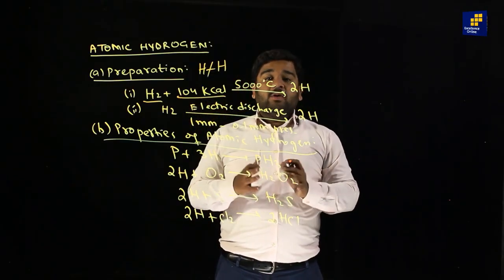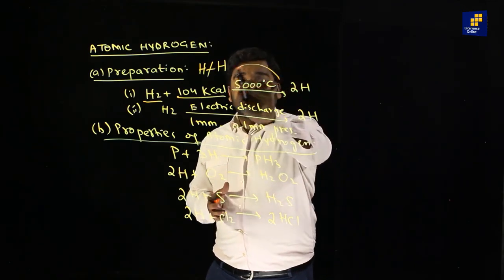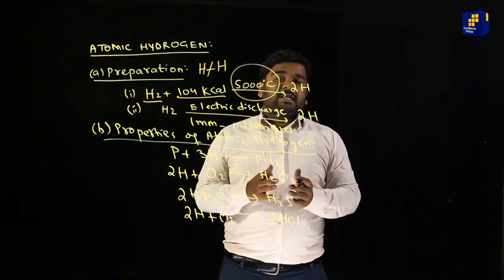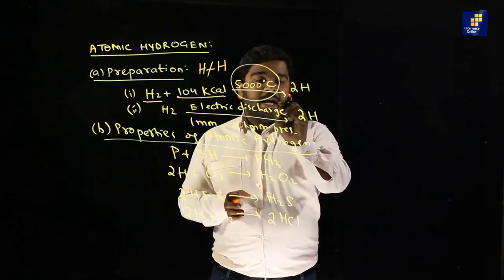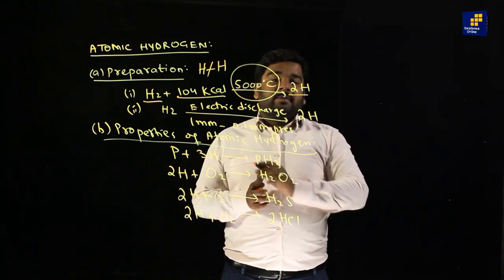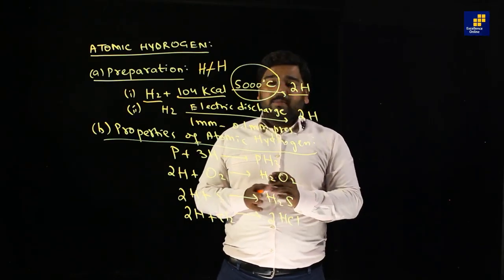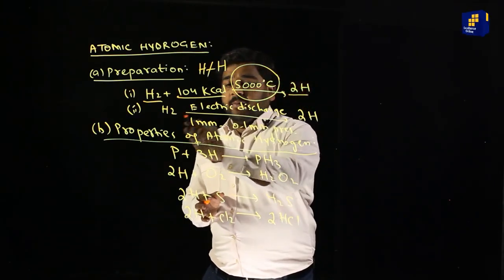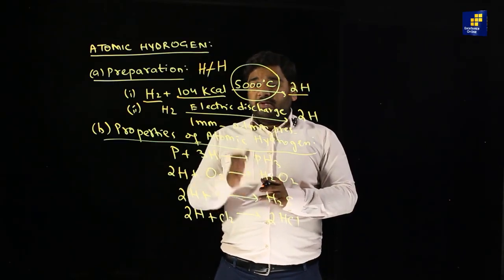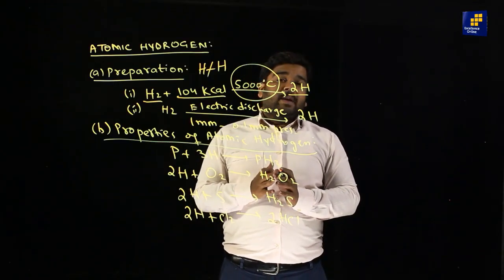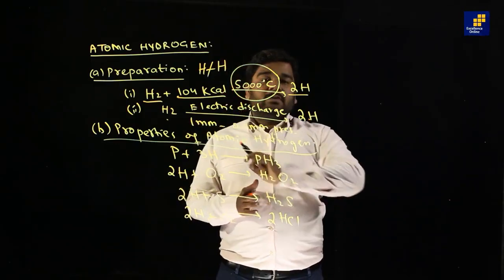अगर 5000 degree centigrade पर — याद रहे यह बहुत ज्यादा temperature है — इस reaction को ले जाते हैं तो atomic hydrogen हासिल होता है। या तो hydrogen को electronic discharge की तरफ ले जाएं और साथ में pressure 1 mm से 0.1 mm तक हो, तब भी molecular hydrogen, atomic hydrogen में convert हो जाएगा।